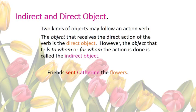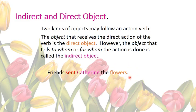Before we move towards transitive and intransitive verbs, you need to know what indirect and direct objects are, because these verbs have everything to do with the object of the sentence. The object that receives the direct action of the verb is the direct object. The object that tells to whom or for whom the action is done is the indirect object. For example, in 'friends sent Catherine the flowers,' 'flowers' is the direct object and 'Catherine' is the indirect object.